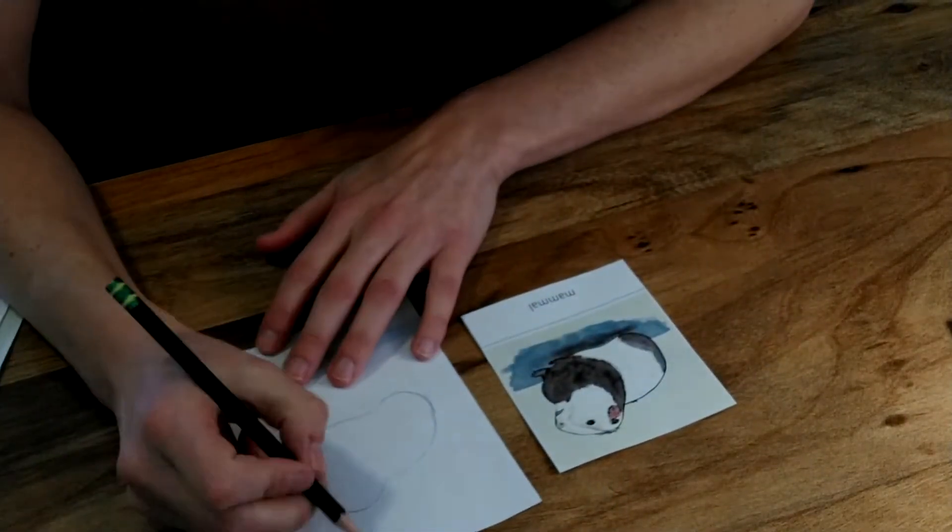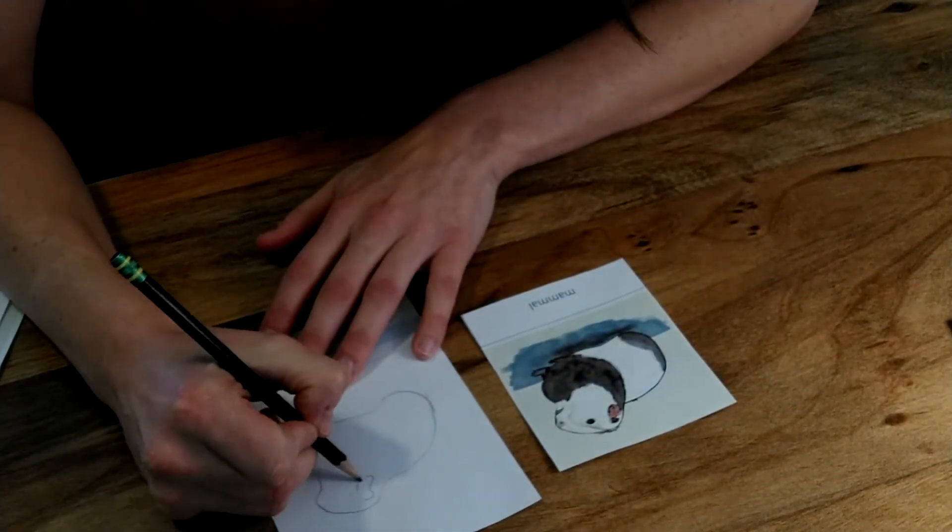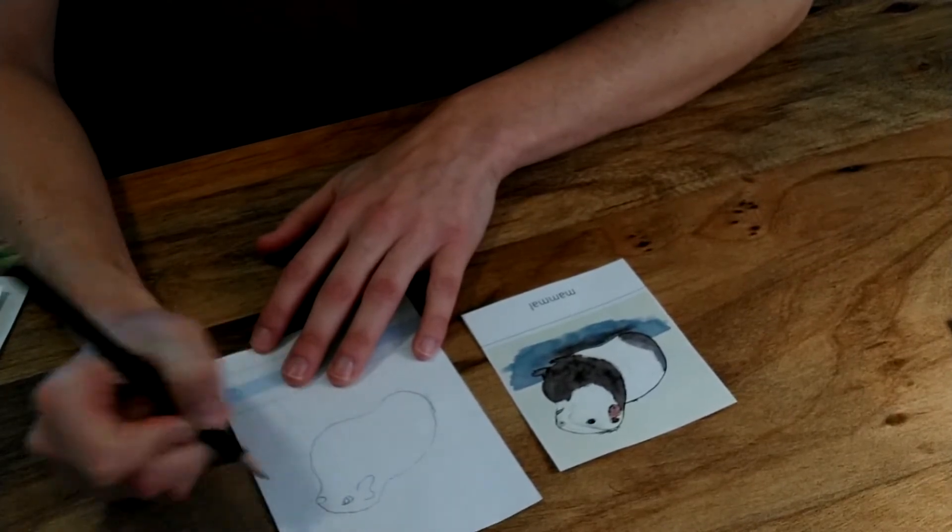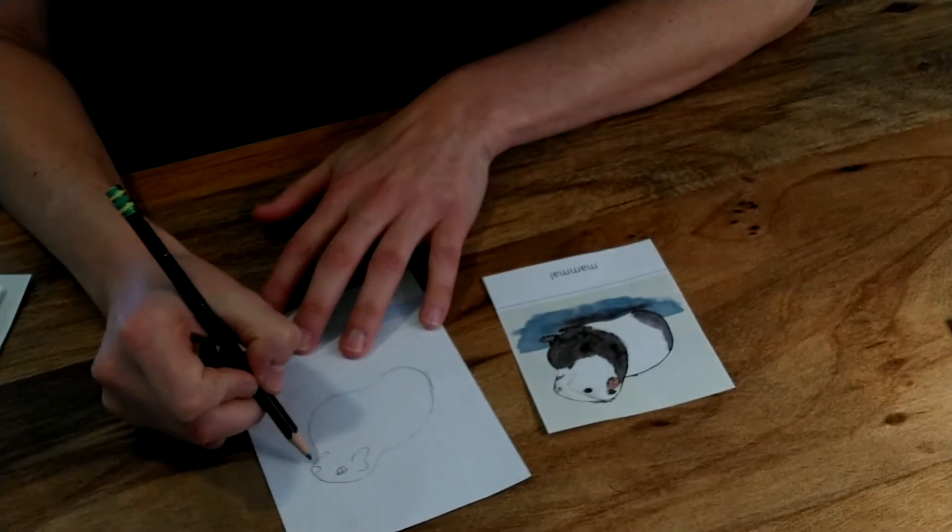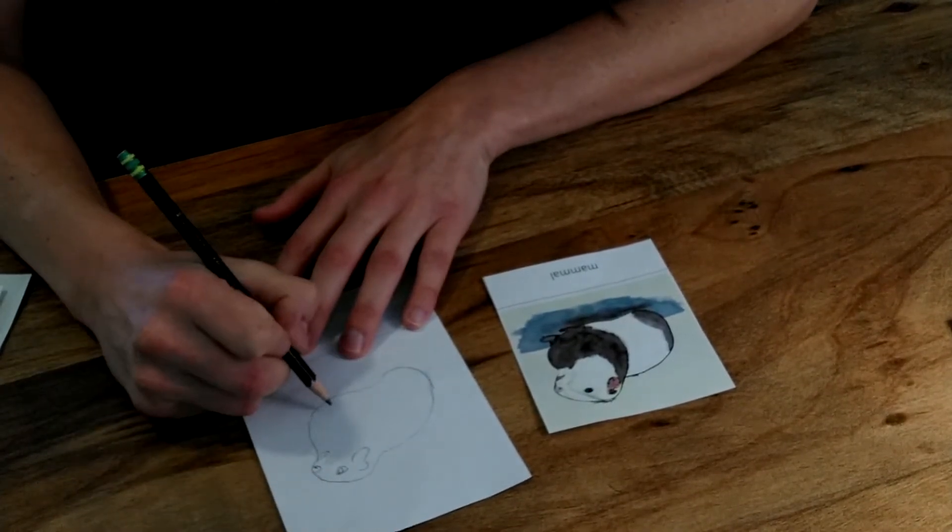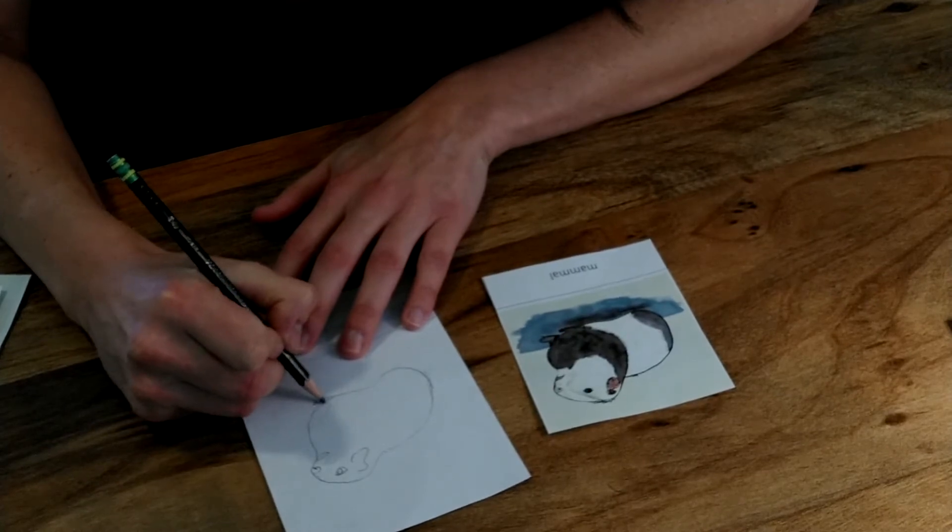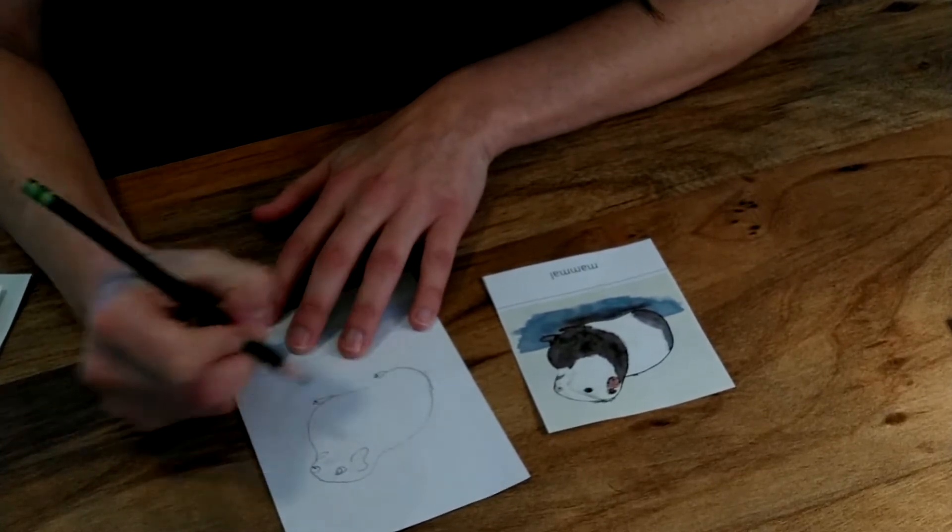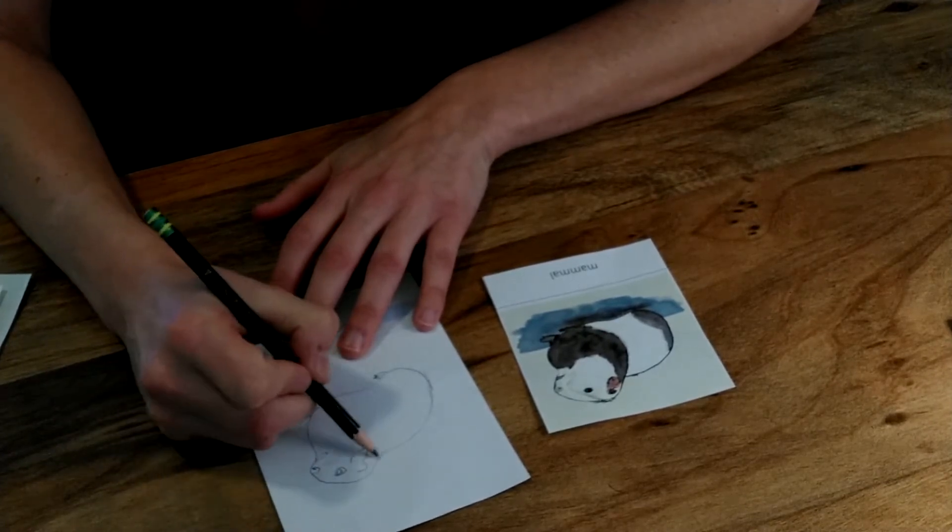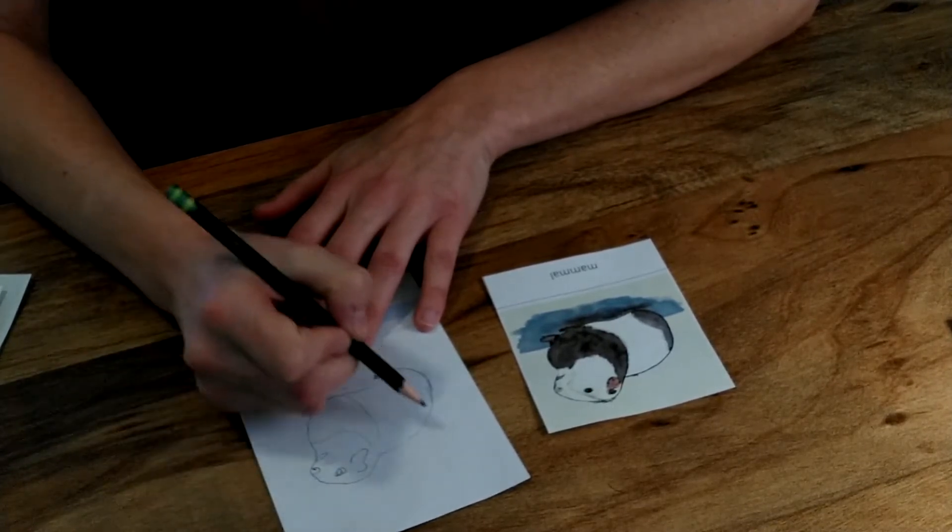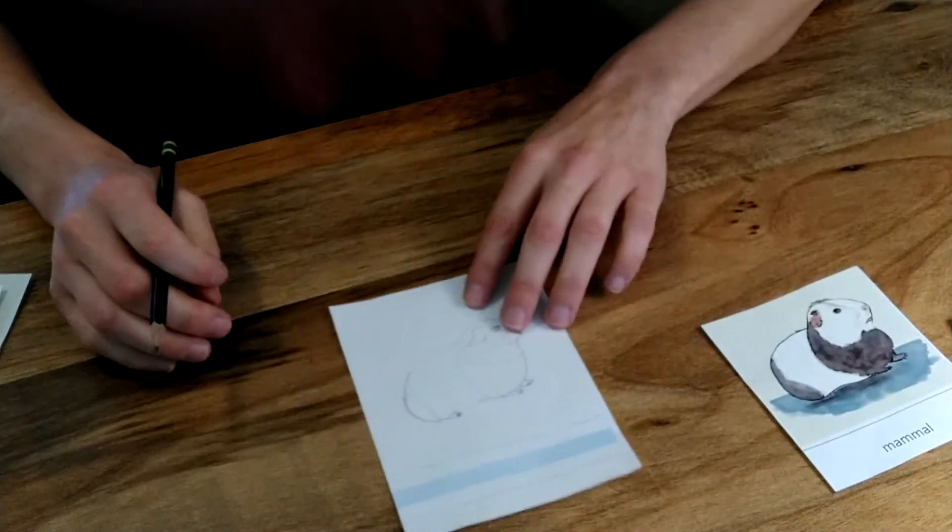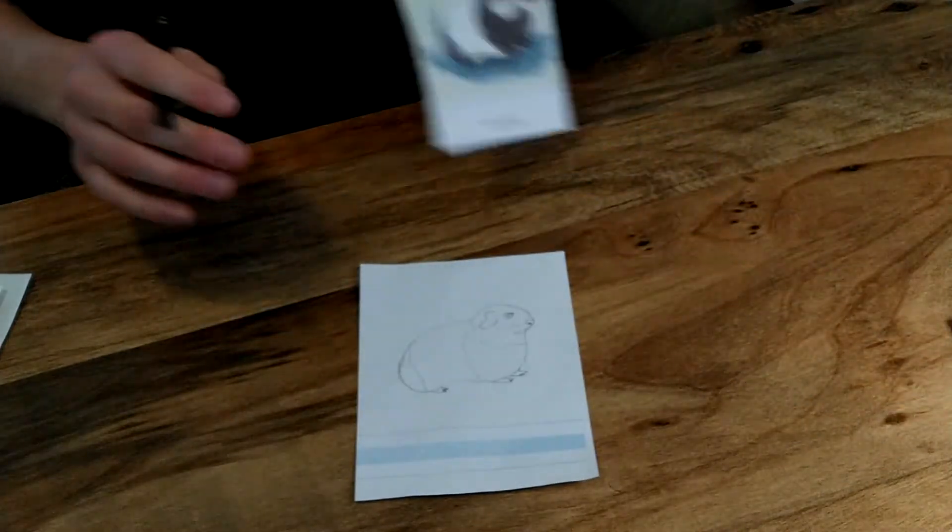Okay and he's got his ear there, eye, nose, mouth, see some whiskers. There's the paws. The color's a little different there. Alright, so there is my guinea pig.